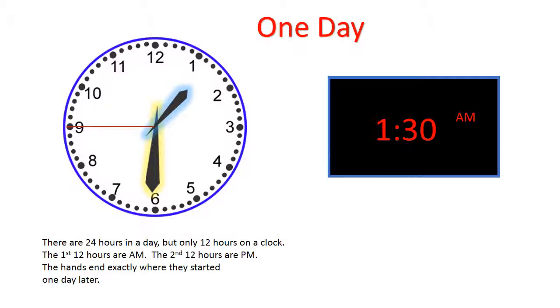There are 24 hours in a day, but only 12 hours on a clock. The first 12 hours are a.m., the second 12 hours are p.m. The hands end exactly where they started one day later.